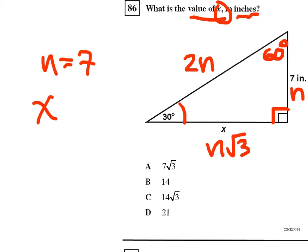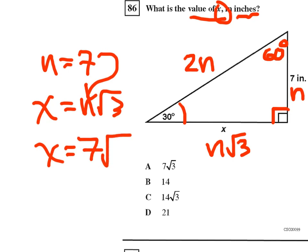Well, x is equal to n root 3, which if I put the 7 in for n, I get x is equal to 7 square root of 3. Answer A.